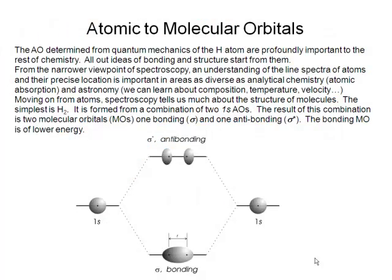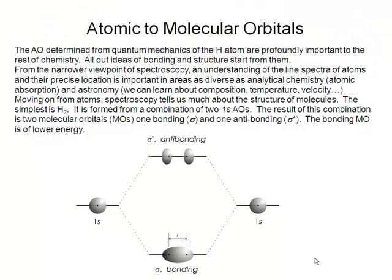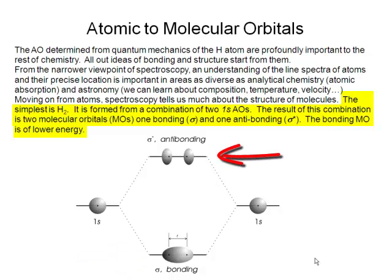We can use the atomic orbitals of the hydrogen atom to start to build up molecular orbitals. Starting with the ground state of the hydrogen atom — the 1s state — we take two hydrogen atoms and combine them to end up with two molecular orbitals: a sigma bonding molecular orbital and a sigma-starred antibonding molecular orbital. Total energy remains the same, but the sigma orbital is lower in energy, so we can form the hydrogen molecule.